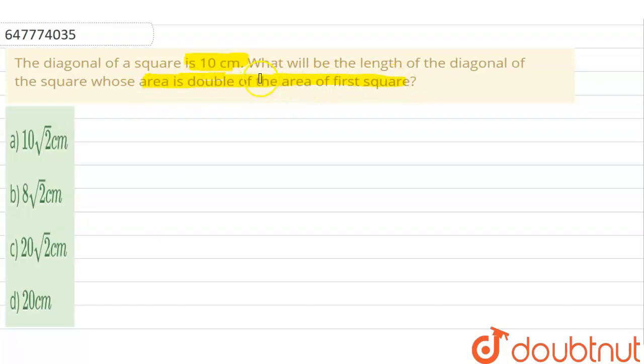Look, here is the first square. We are talking about the second square as well. We are solving the first square. Look, how much is the diagonal? 10 cm.